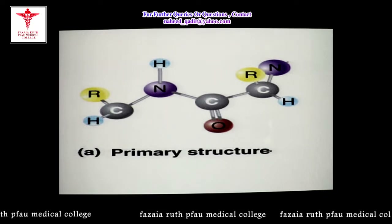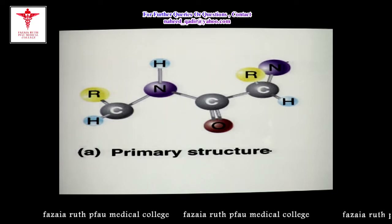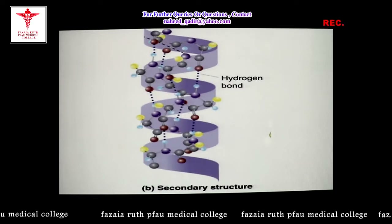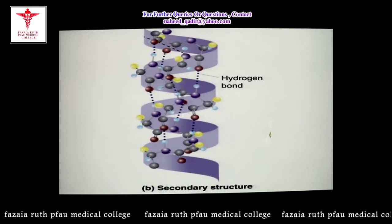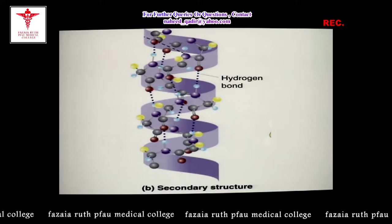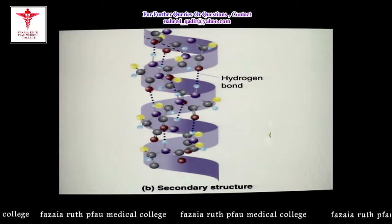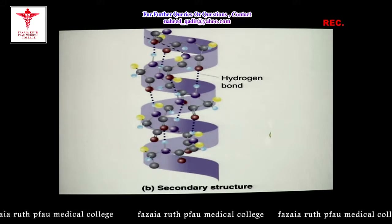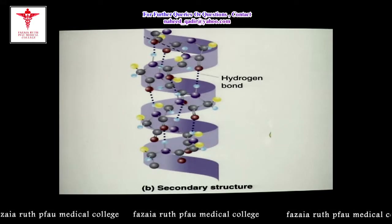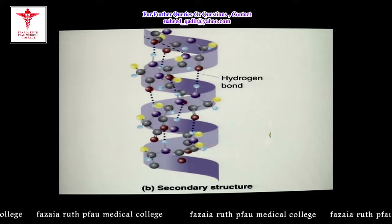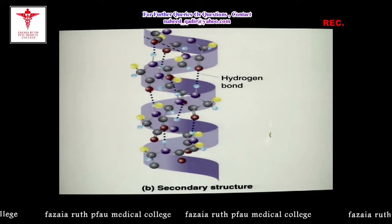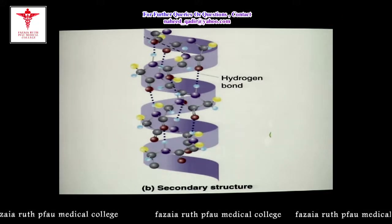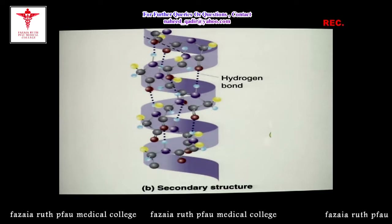The second level of protein structure is called the secondary structure. In the secondary structure, it is again a single polypeptide chain which is arranged either in a spiral manner — folded in a spiral — or it may be folded in the form of sheets.